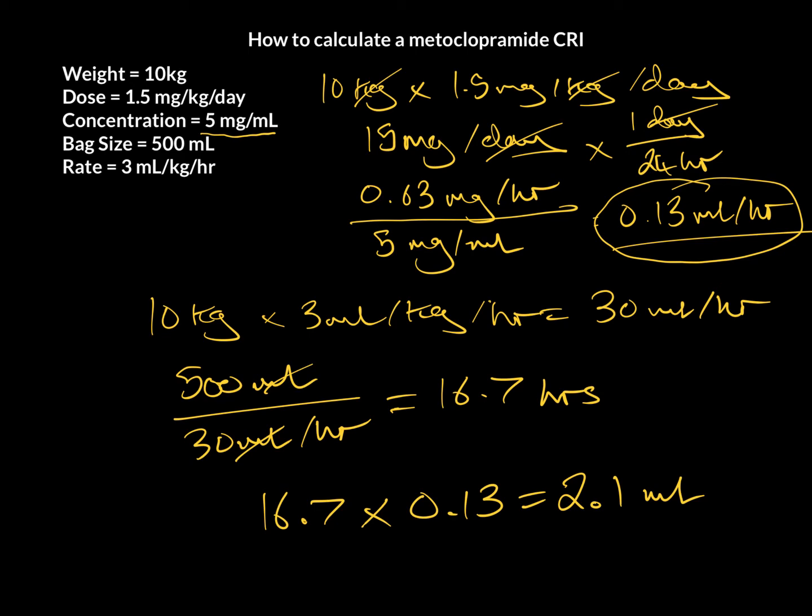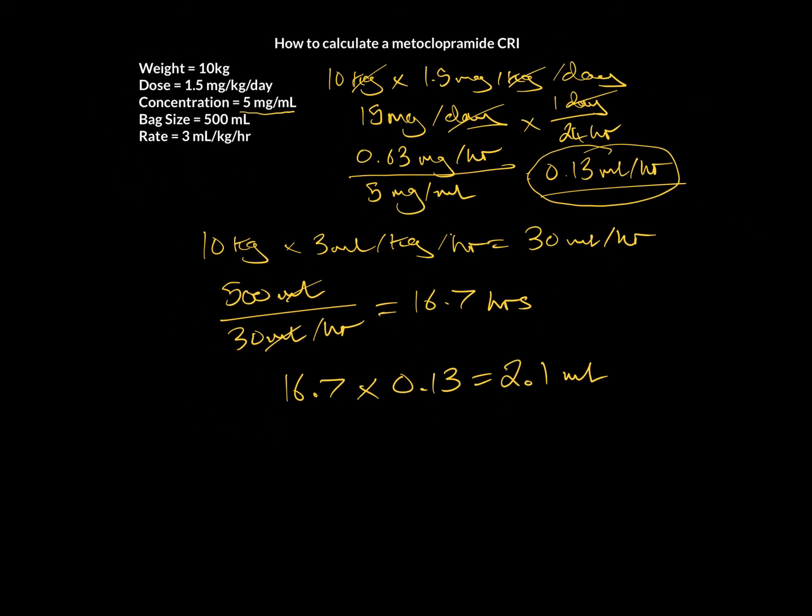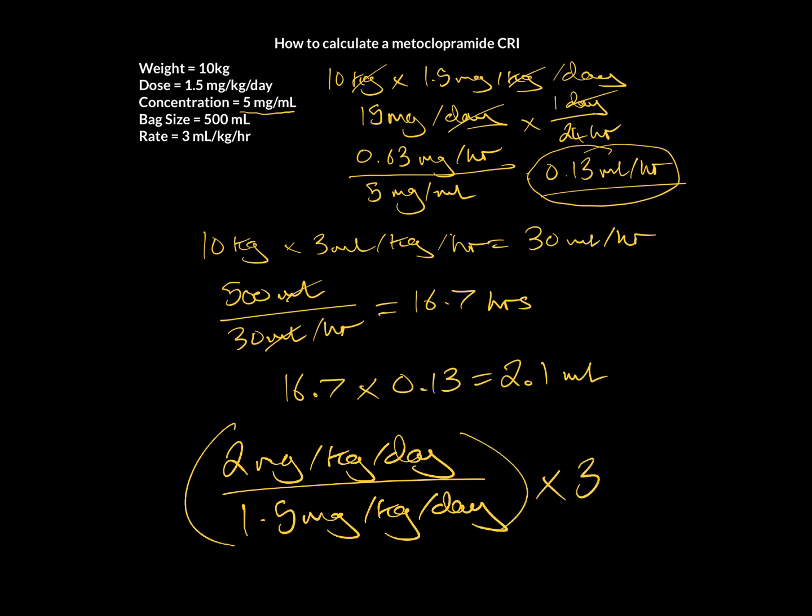If you want to titrate the dose in this situation, then what you need to do is take your desired dose. So, let's say you want to go up to 2 mg per kg per day. Divide it by the current dose of 1.5 mg per kg per day. And then multiply that by your current rate, which is 30, which gives us 40 mLs per hour. If you want to go the other way, you just do the same thing. Your desired dose, maybe you want to go down to 1, so you do 1 divided by 1.5 times 30, and that will give you 20. So, it's fairly straightforward to titrate up or down.